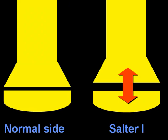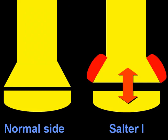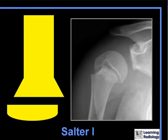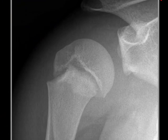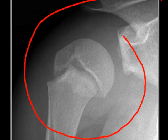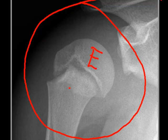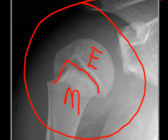Sometimes, after a matter of several days of immobilization, periosteal new bone formation can present itself and indicate the presence of a fracture. Here is an example of a Salter-1 fracture of the proximal humerus. You can see that there is displacement of the epiphysis on the metaphysis and widening of the epiphyseal plate.